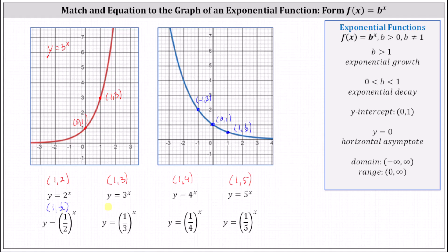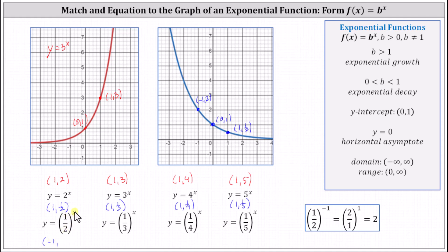For y equals one-third to the power of x, when x is one, y equals one-third. For y equals one-fourth to the power of x, when x is one, y equals one-fourth. For y equals one-fifth to the power of x, when x is one, y equals one-fifth. Going back to y equals one-half to the power of x, when x is negative one, we get one-half to the power of negative one, which equals positive two. The graph does contain the point negative one comma two, which confirms the equation for the blue graph is y equals one-half to the power of x.